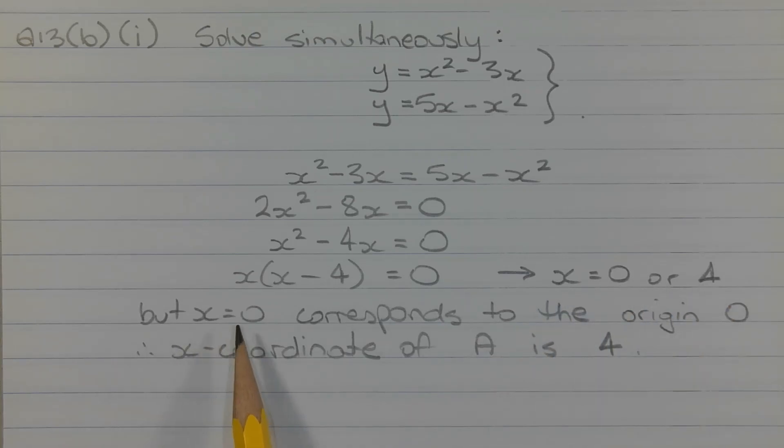But x equals 0 corresponds to the origin O. So x equals 4 must be the x-coordinate of point A. Therefore, the x-coordinate of point A is 4.